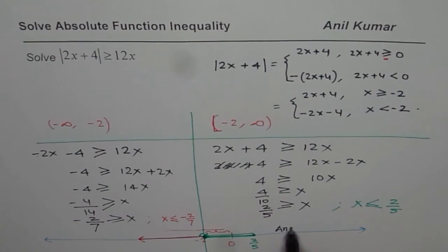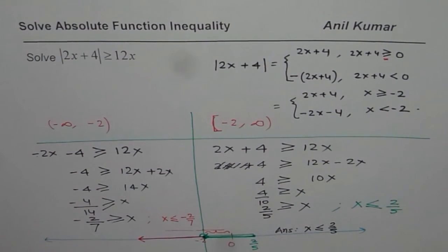That is x is less than or equals to 2 over 5. So that is how you get the solution of the given question.